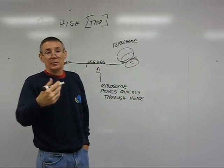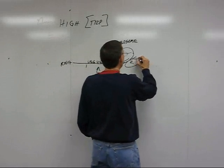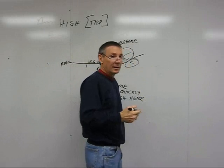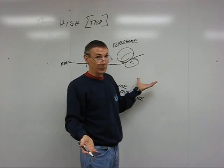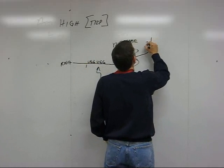Now, RNA polymerase continues transcribing, it makes region 3. Region 3 can't pair with region 2 because there's a ribosome in the way, so here's region 3 sitting here.